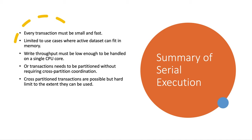Summarizing the constraints of serial execution: every transaction must be small and fast because it executes on a single thread, and a slow transaction can block all others. It is limited to use cases where the active data set fits in memory, since disk access is too slow. It requires low write throughput because execution is on a single CPU core. For high write throughput, transactions need to be partitioned without requiring cross-partition coordination due to overhead. Cross-partition transactions are possible but there is a hard limit to the extent they can be used.